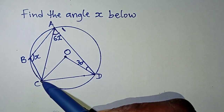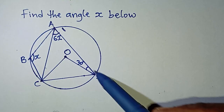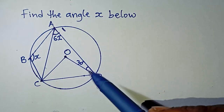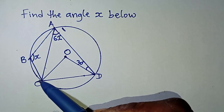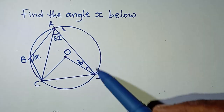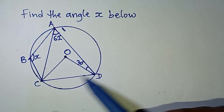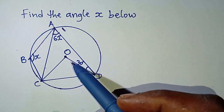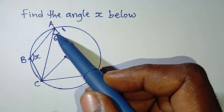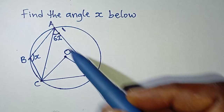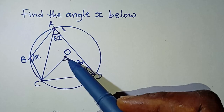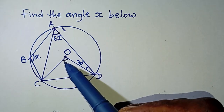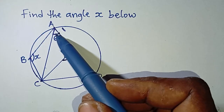From the same points C and D, we have two other lines — one moving to the center and another also moving to the center. When lines originate from the circumference and from the same point two other lines originate to the center, there is a relationship: the angle at the center is twice that at the circumference of a circle.